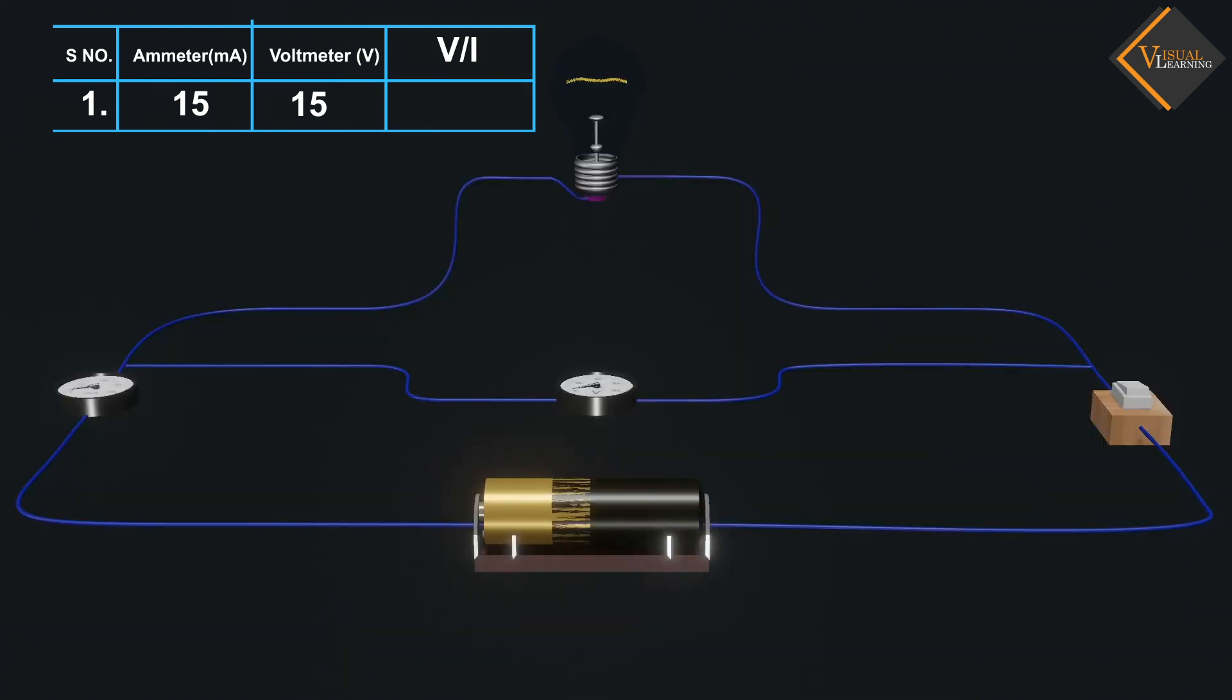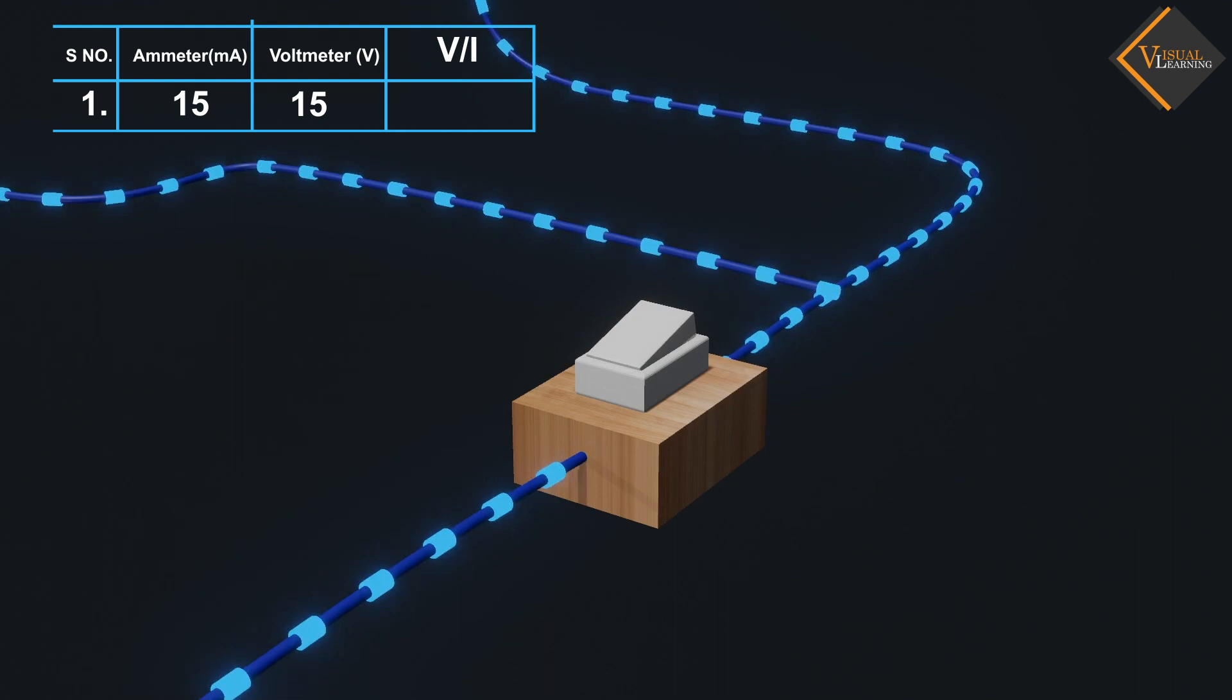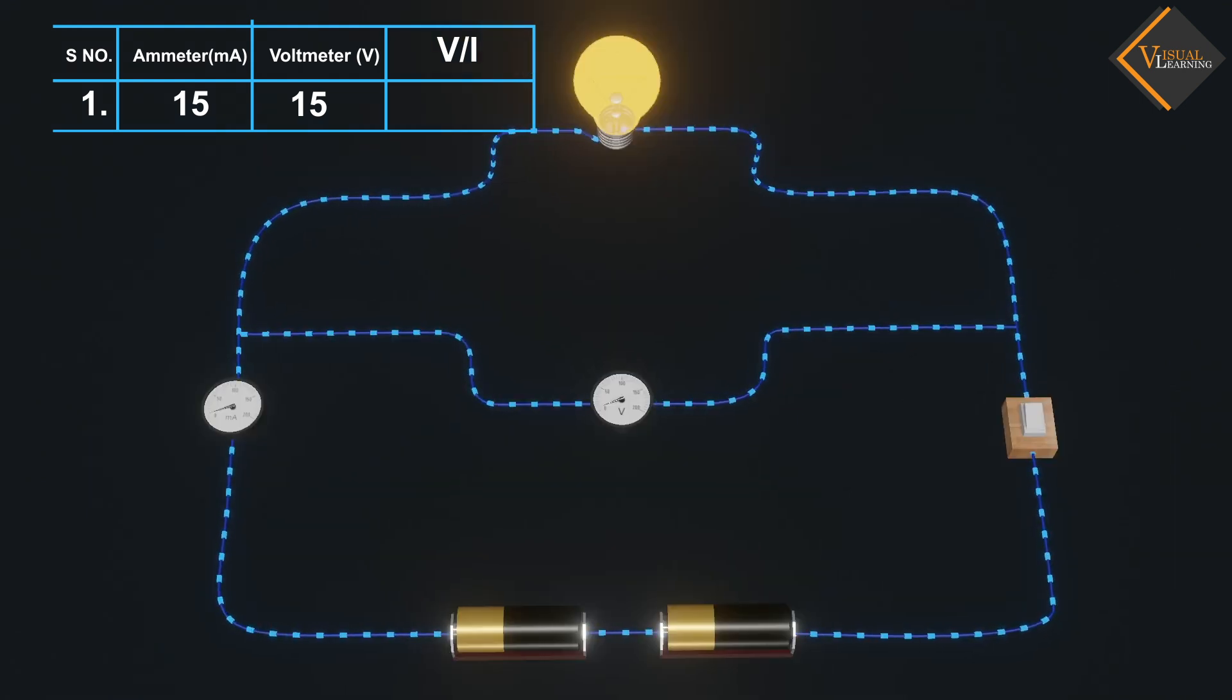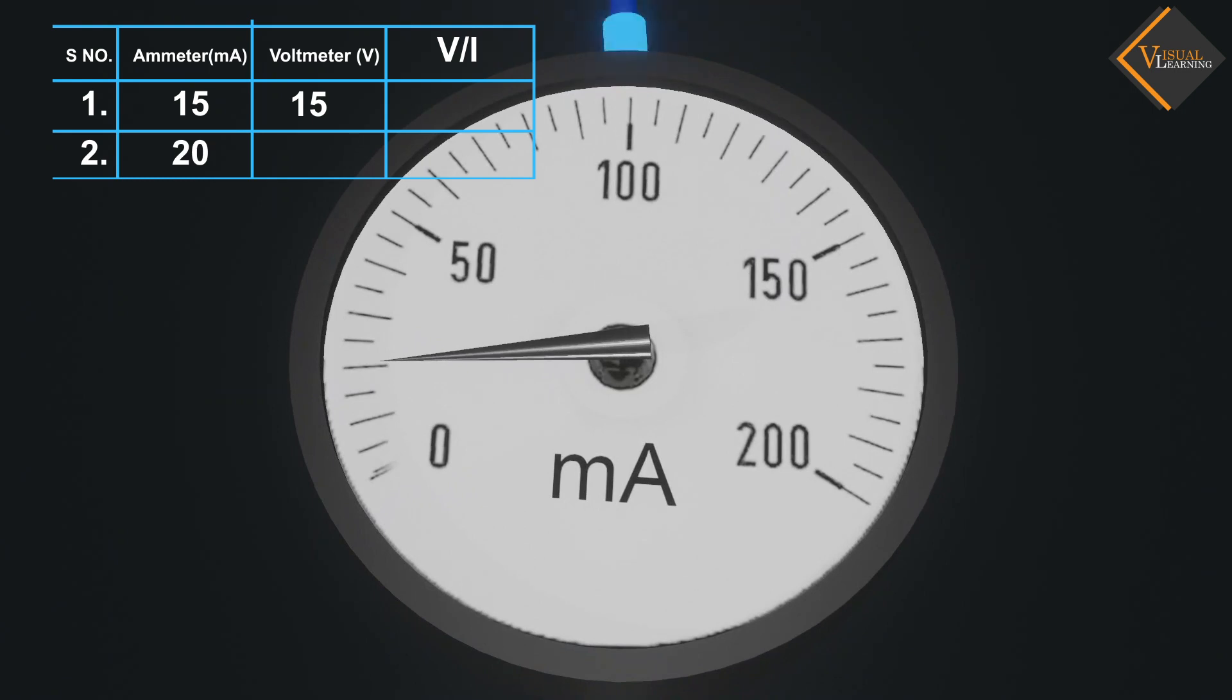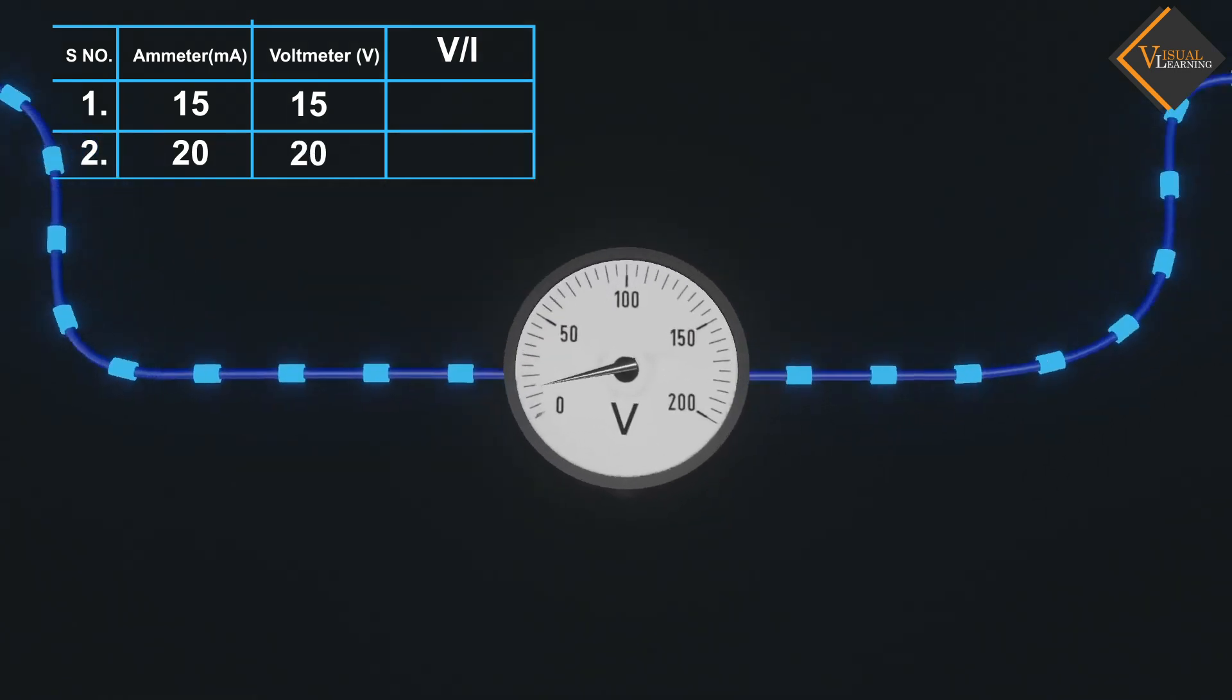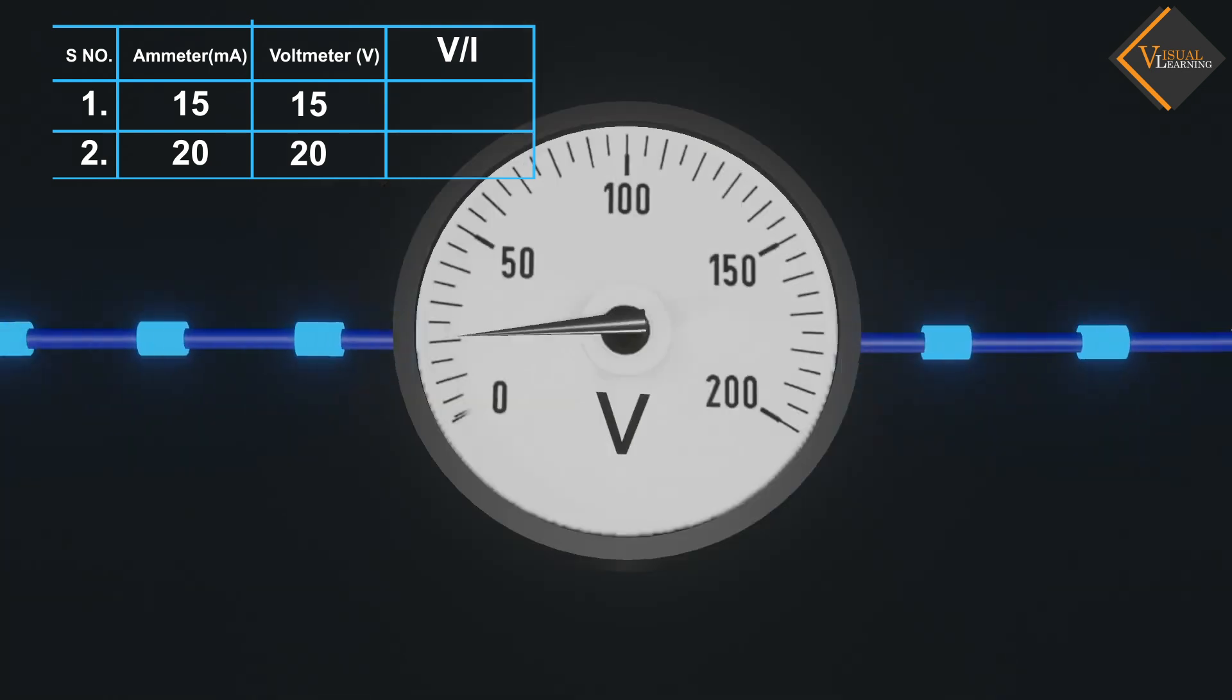Next, we add an identical cell to the circuit in series and turn on the switch. Again, note the respective readings of the ammeter and voltmeter. This time, we see that ammeter reading increases in the same proportion as to the voltage.